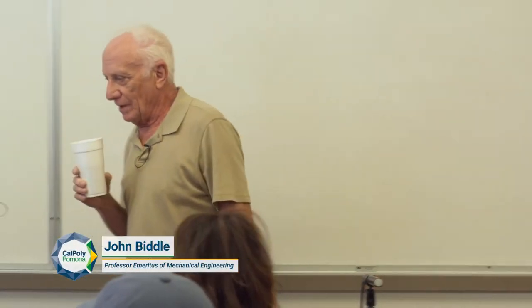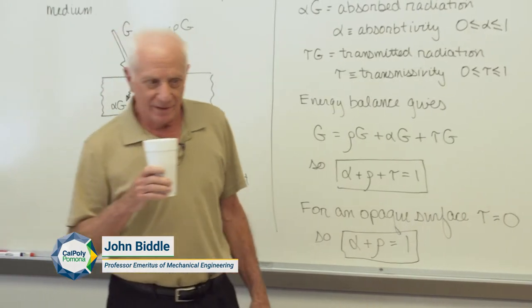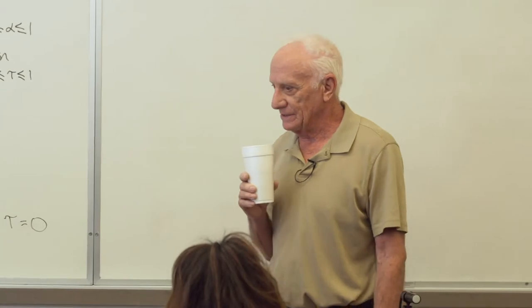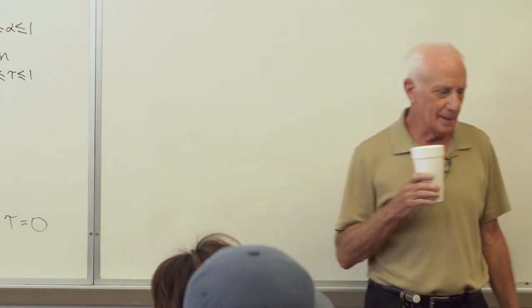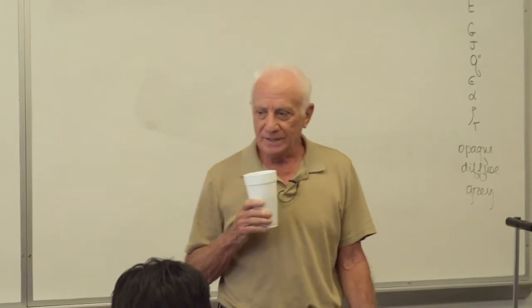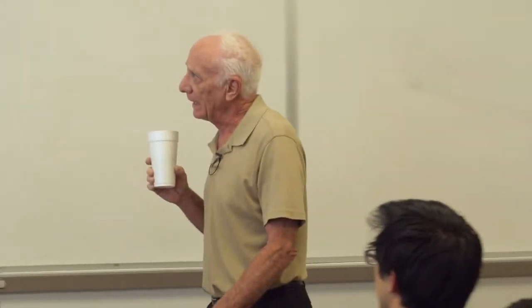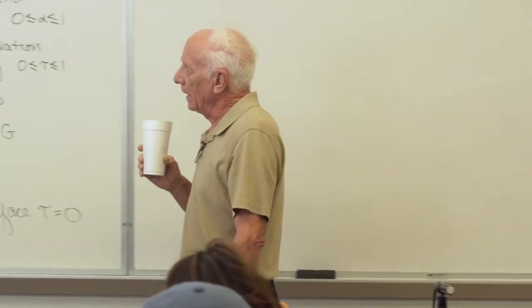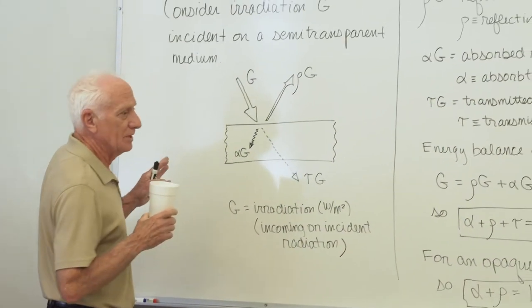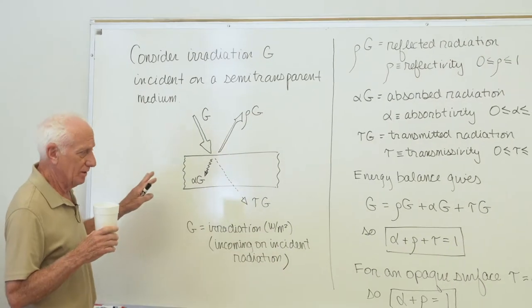We are in Chapter 12, Radiation Heat Transfer. Last time we talked about introductory concepts and definitions. We also did an example problem involving table 12.1, a band emission problem. This morning we're going to continue and begin by looking at incident radiation called irradiation on a semi-transparent media, like a piece of glass.